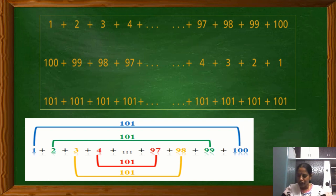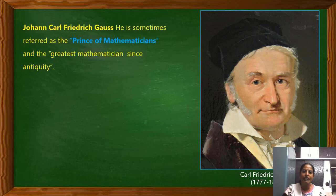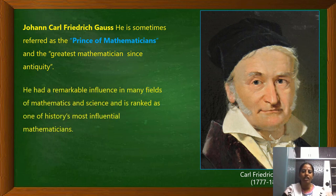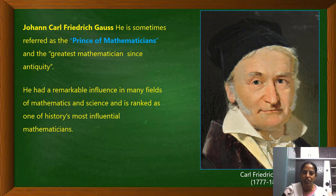Do you know, children, who is that 8-year-old boy? Yes, he is the great mathematician for all time — Johann Carl Friedrich Gauss. He is sometimes referred to as the prince of mathematicians and the greatest mathematician since antiquity. He had a remarkable influence in many fields of mathematics and science and is ranked as one of history's most influential mathematicians. Now I think you are inspired by his story. You all read about him and his contributions. Just Google his name or find him in a book on great mathematicians.